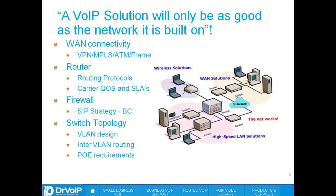And if you're paying attention, video over your network as well. If you've got a multi-site solution, you're going to need to deal with WAN connectivity issues. You're going to need a router and be aware of the various routing protocols running in that router and how they will affect your VoIP deployment. Carriers, and setting up QoS and service level agreements with your carriers, is a very integral part of a VoIP solution.